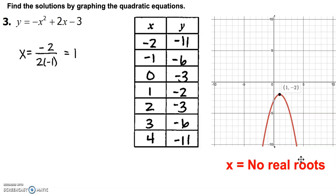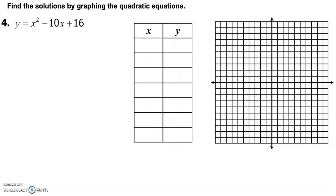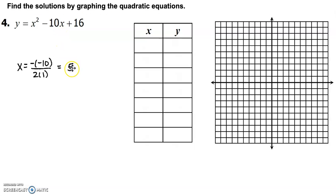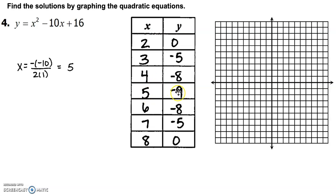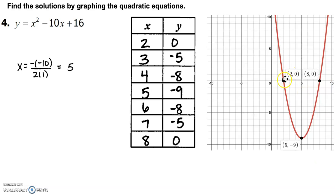When you get into Algebra 2 you'll talk about imaginary numbers — this equation does have roots, but they're imaginary. For example 4, y = x² − 10x + 16: the x-value of the vertex is 5, giving a vertex of (5, −9). Building the table, we find points where y = 0 at (2, 0) and (8, 0). The graph confirms it hits the x-axis at those points, so the roots are 2 and 8.